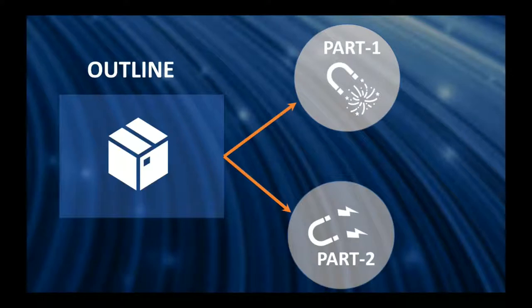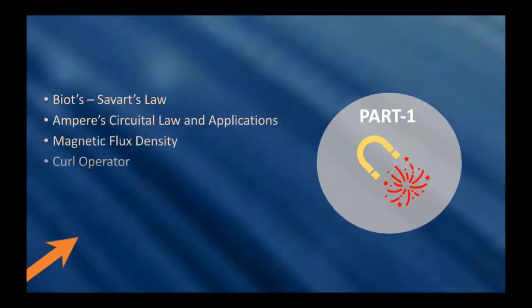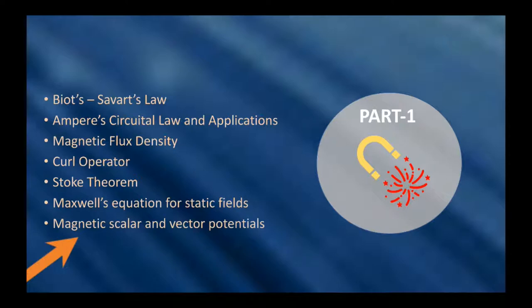The things that I will be covering in Part 1 are basically a few laws which you would have come across in your plus 2, plus 1, or 10th: Biot-Savart's law, Ampere's circuital law and its applications. We'll be seeing magnetic flux density, which is very much related to the electrostatics part where we discussed electric field intensity and electric flux density. Similarly, we'll discuss magnetic flux density and magnetic fields. We'll be talking about the curl operator here. If you remember in electrostatics, we discussed the divergence operator. Similarly, we'll be speaking about the curl operator here. If you recall, divergence was a dot product where curl is a cross product. We'll understand curl in the later section.